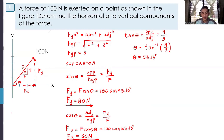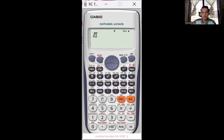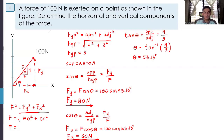To verify, we can use the Pythagorean theorem: F = √(FY² + FX²) = √(80² + 60²) = √(6400 + 3600) = √10000 = 100. Our F equals 100, which matches our given value — check!